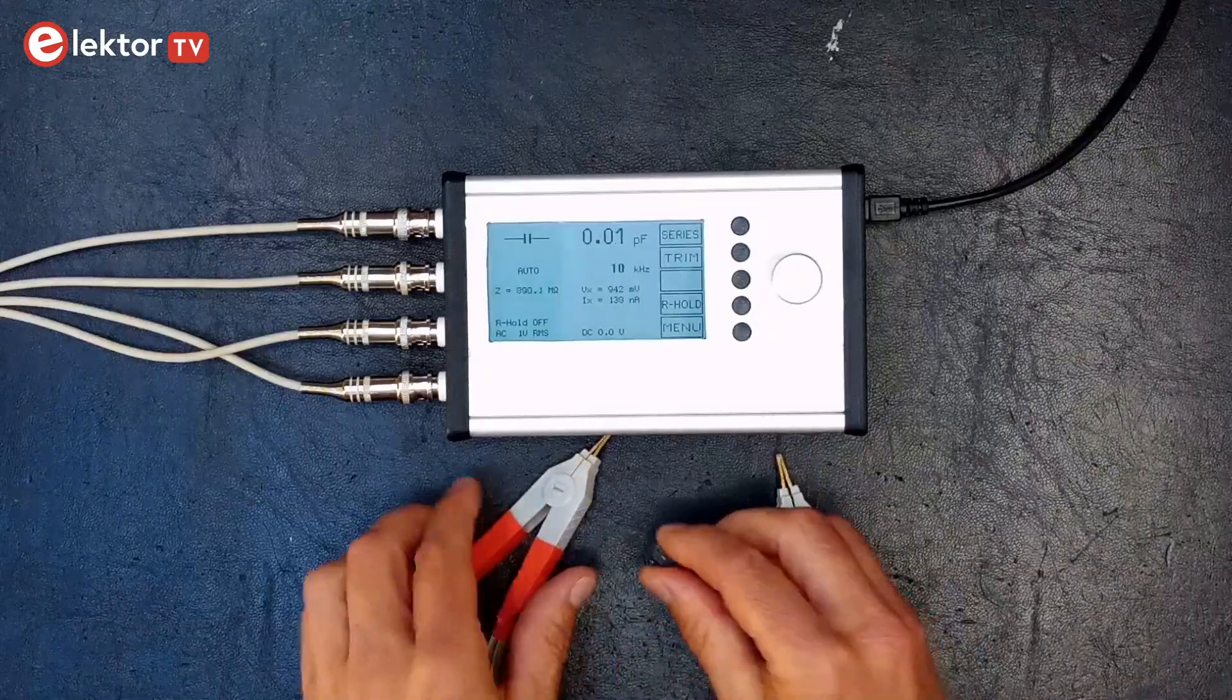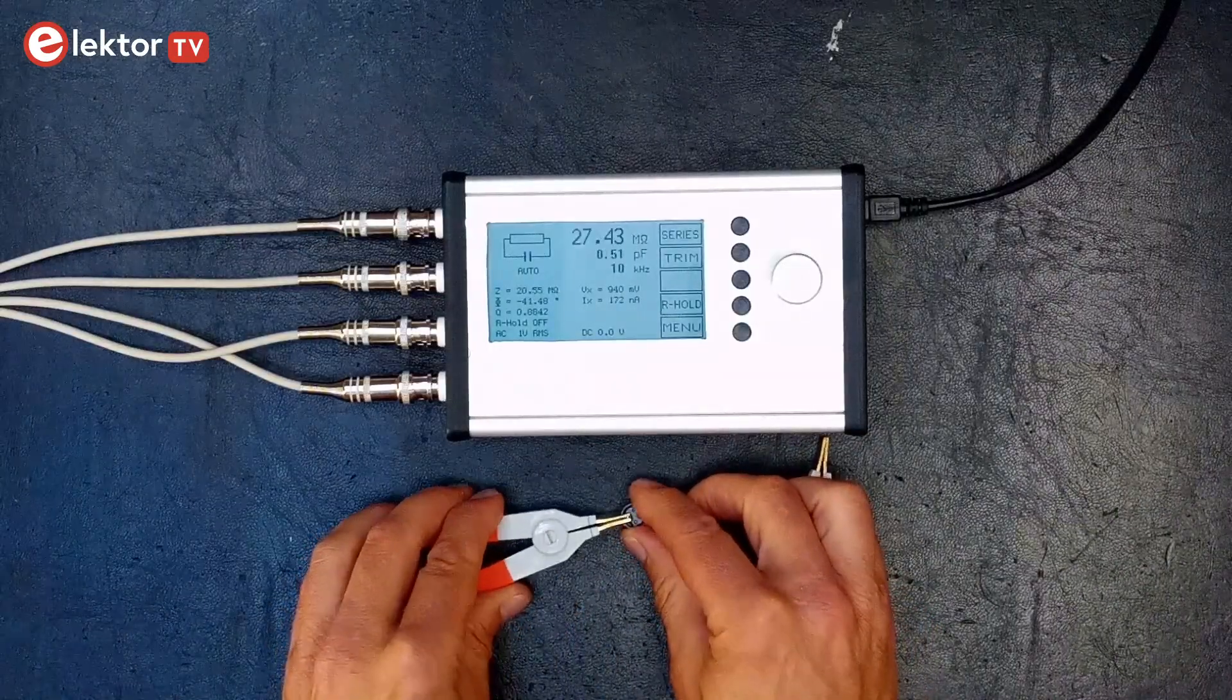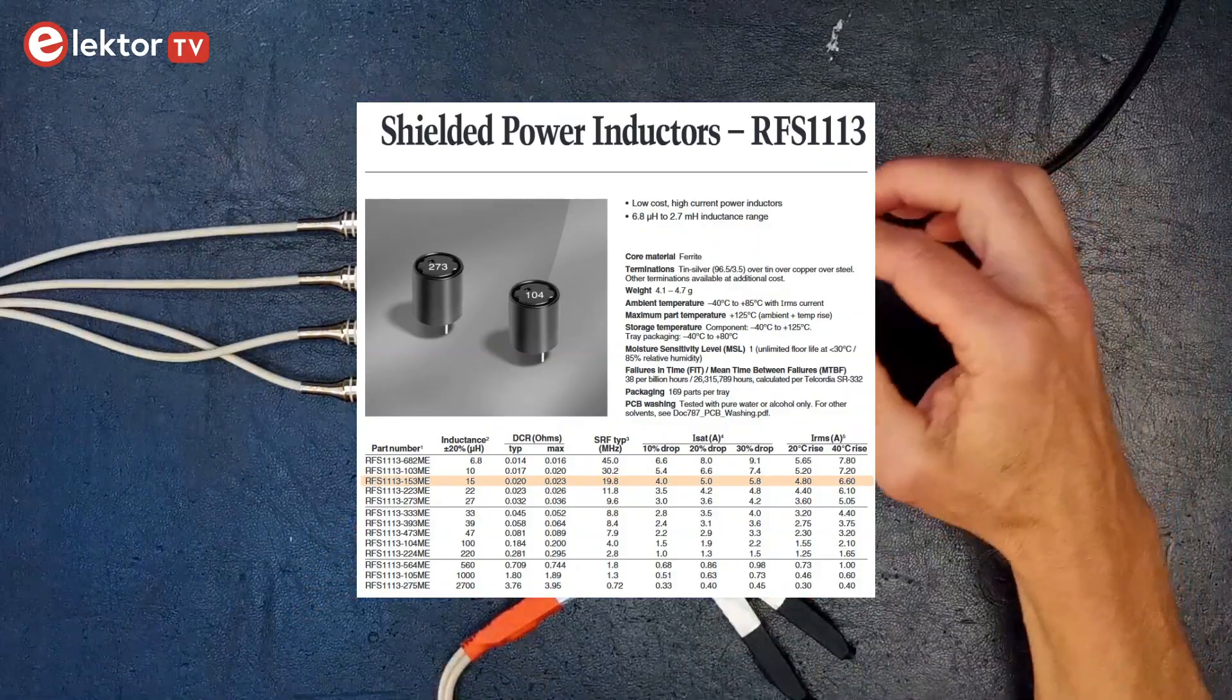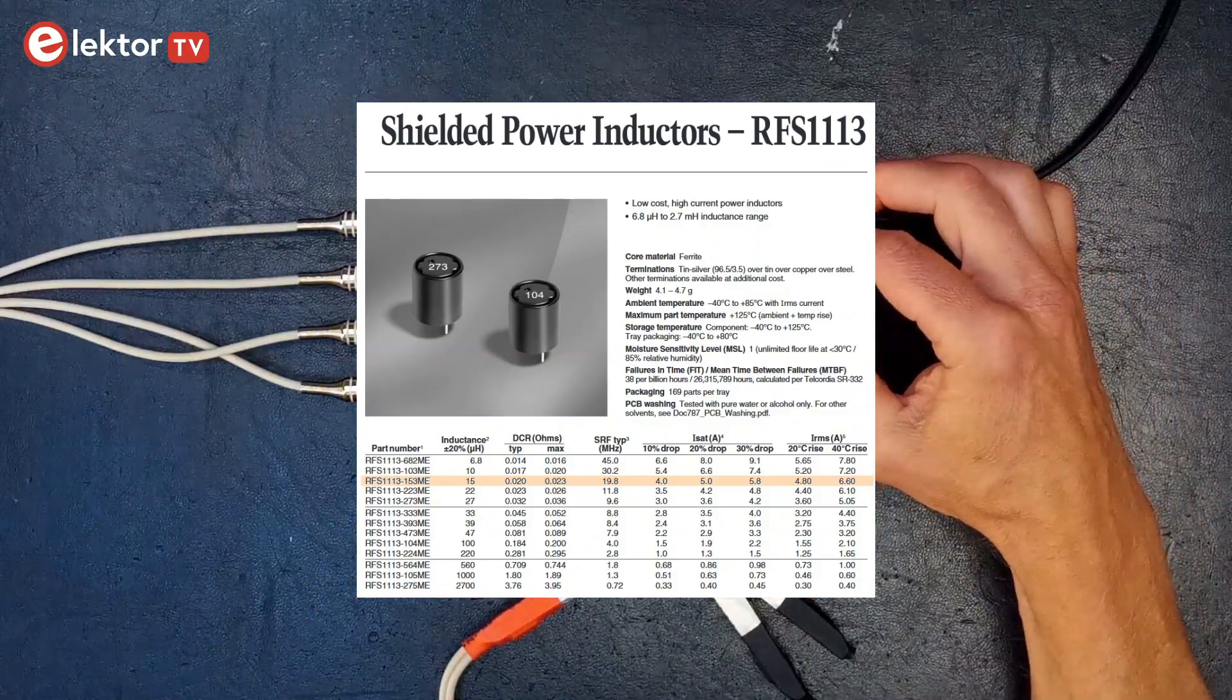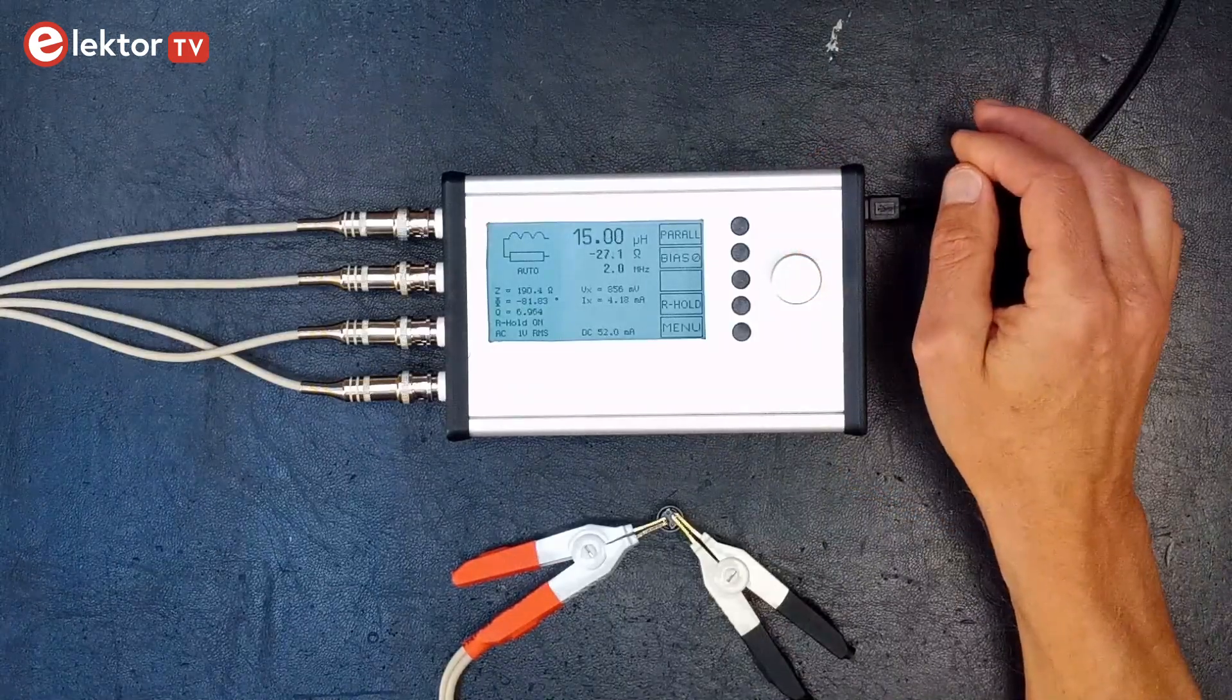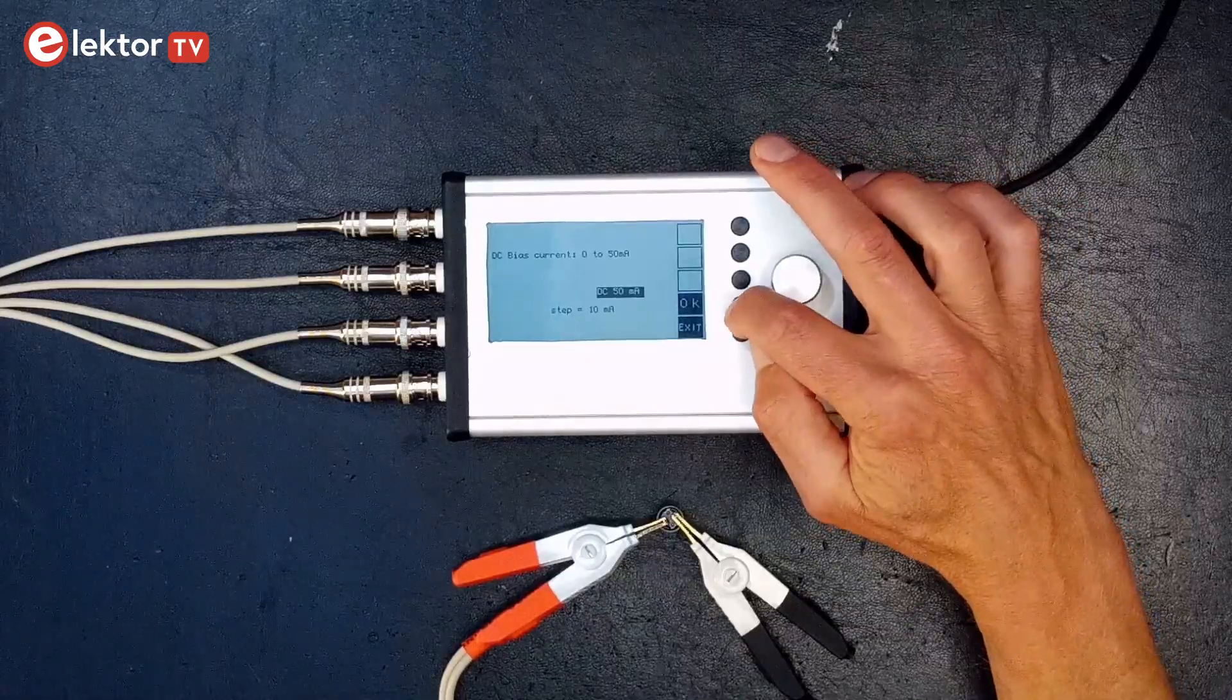I have repeated the procedure for a power inductor, 15μH RFS1113-153ME from Coilcraft. I did a first run from 10kHz to 2MHz without bias current and then a second run with a bias current of 50mA.